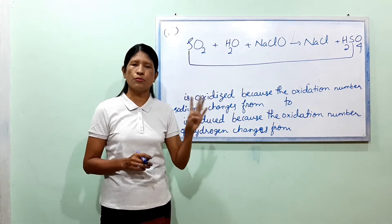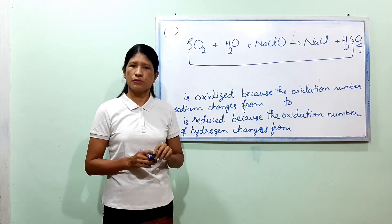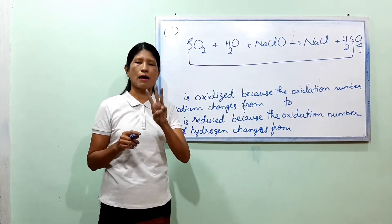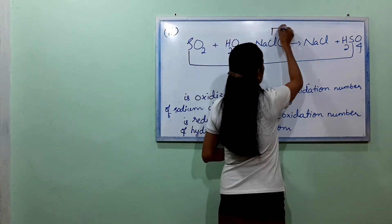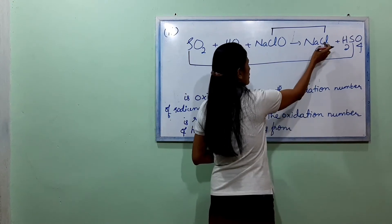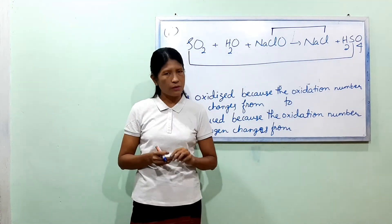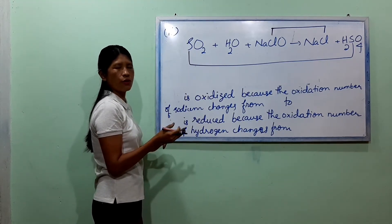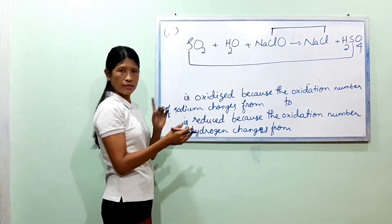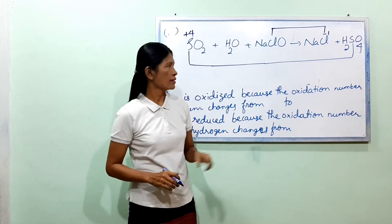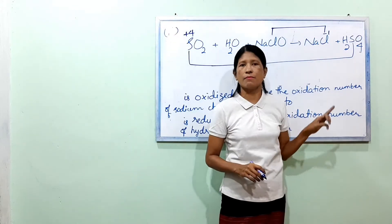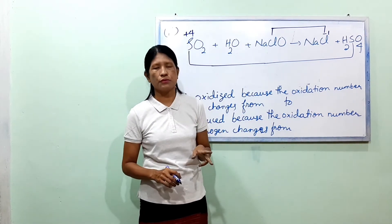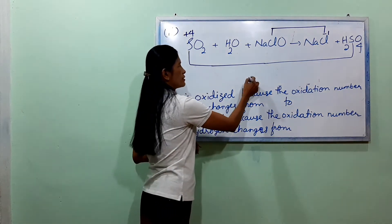For NaClO: Na is +1, Cl has oxidation state, and ClO. The line gives O as -2, so that's -4 for two oxygens. For H2SO4: O is -2, so four oxygens give -8. H2 contributes +2, so sulfur S is +6.